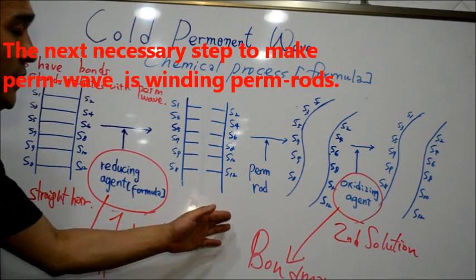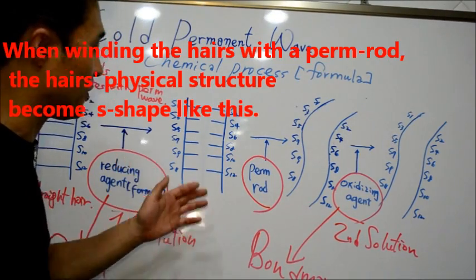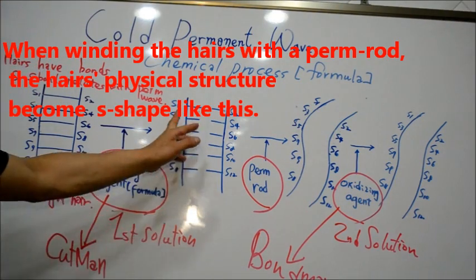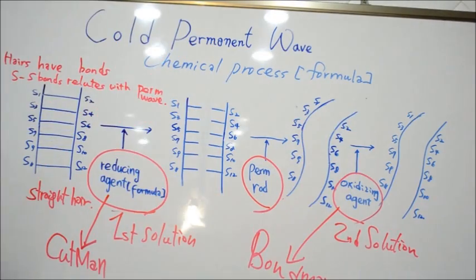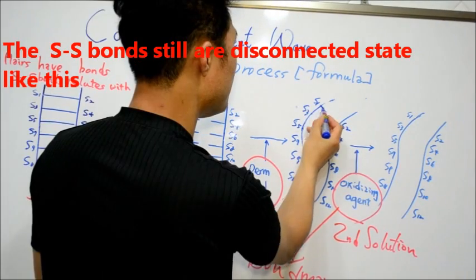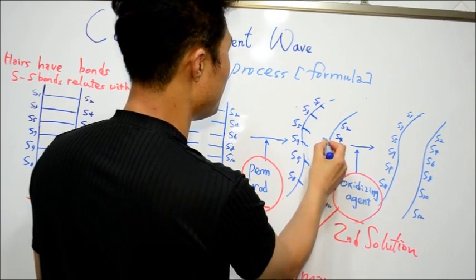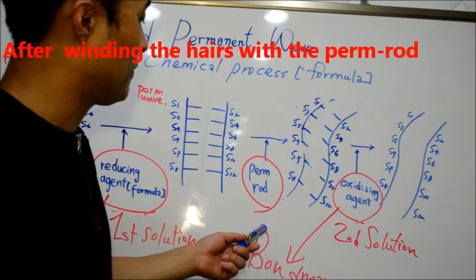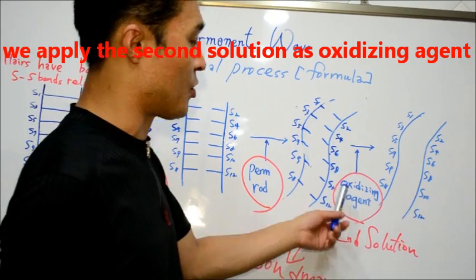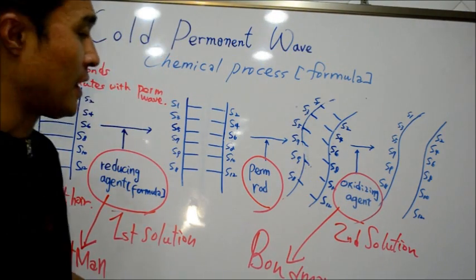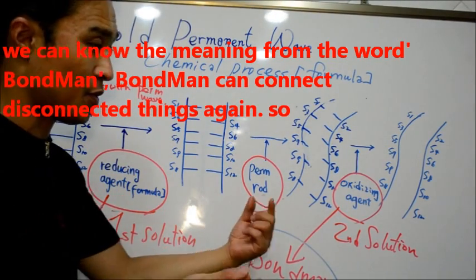The next step is winding perm rods. When we wind the hair with perm rods, the hair physical structure is not set yet. Still disconnected. After winding perm rods, we apply the second solution as oxidizing agent. As I said before, oxidizing agent reconnects the bonds again.